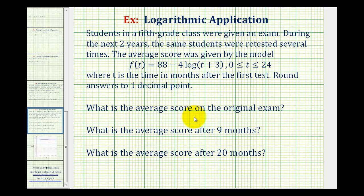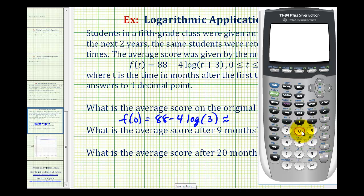The first question is what is the average score on the original exam? The time for the original exam would be t equals 0, or at zero months when the first test is given. So we need to determine the function value f(0) to find the average score on the original exam. That would be 88 minus 4 times the common log of 0 plus 3, so it's just log 3. We'll go to the calculator to get a decimal approximation. We have 88 minus 4 common log 3, and the initial average score to the nearest tenth would be 86.1.